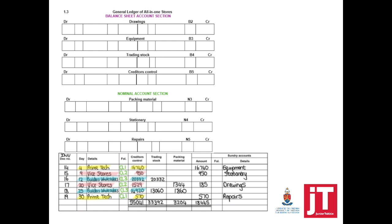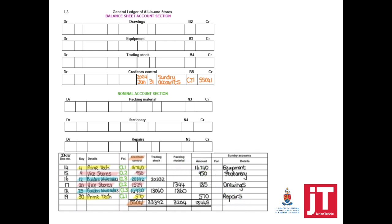Now we move to the general ledger. From the creditors journal, creditors control will always be credited — our liabilities increase on the credit side; the rest is going to be debited. We start by posting the creditors control money column total to the creditors control account in the balance sheet section. Because it's a money column, it is posted on the last day of the month. Details is 'sundry accounts' — because we bought on credit: trading stock, packing material, equipment, stationery, drawings, repairs. The total was $55,041.